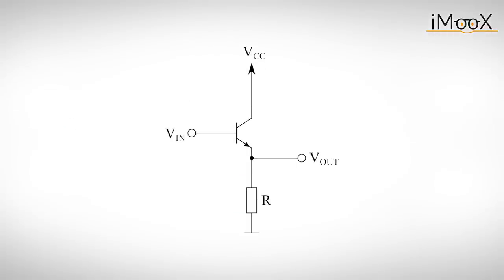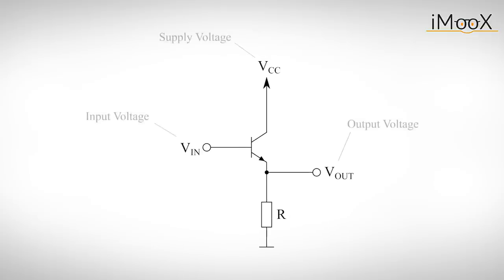The transistor is supplied by two voltage sources. One at the base which we further refer to as input voltage and one at the collector which we call supply voltage. The output voltage of the transistor circuit is located at the emitter. The emitter voltage at the base leads to an input current called IB which as we already know causes a proportional current at the output called IC.